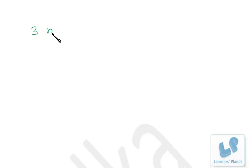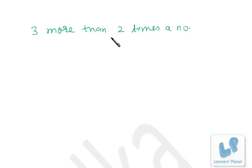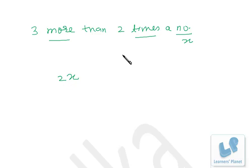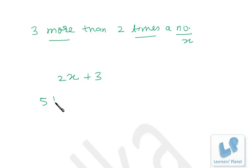But there are cases when more than one mathematical operation appears in a single verbal expression. For example: 'three more than two times a number.' Here you need two operations — 'times' and 'more.' Take the number as x, then two times a number is 2x, and three more gives the algebraic expression 2x + 3.